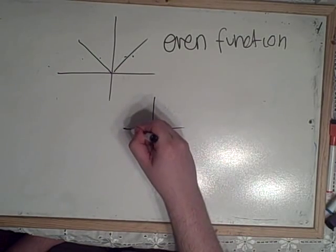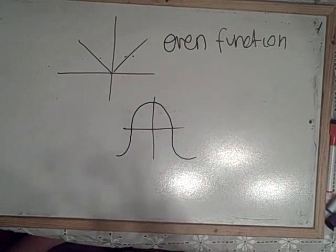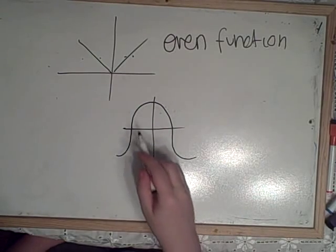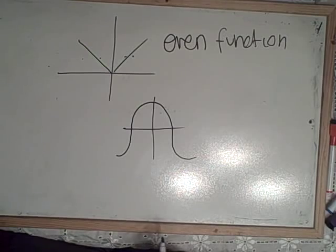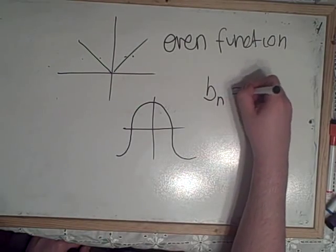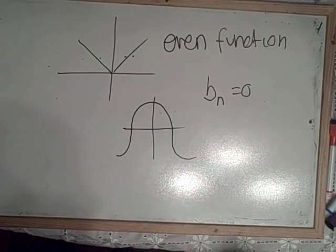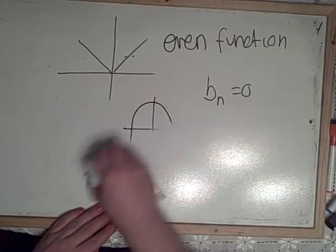That is also an even function. And what it's saying, when you have an even function, is that bn equals zero. So in your Fourier series, where you have your formula for bn, this is equal to zero. So that saves you a bit of time in working out in an exam.